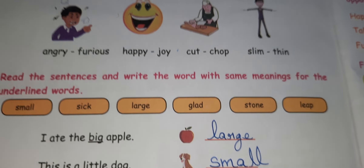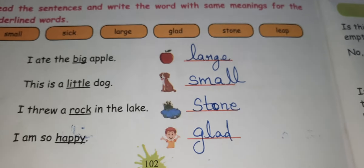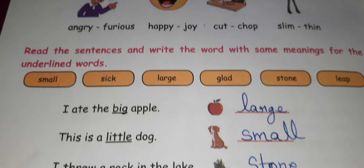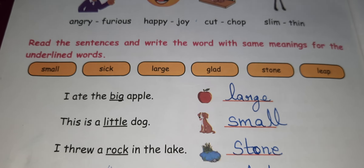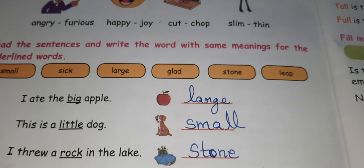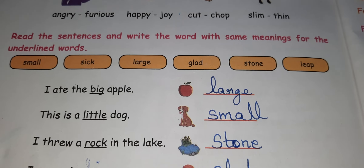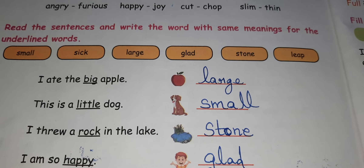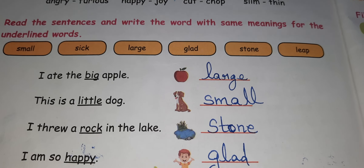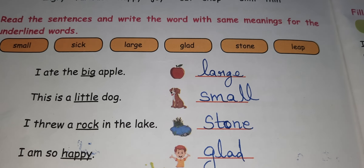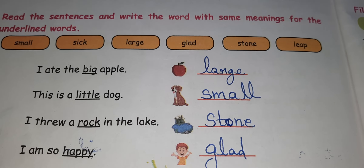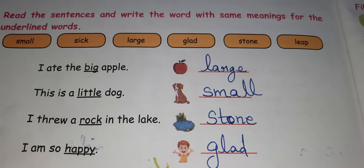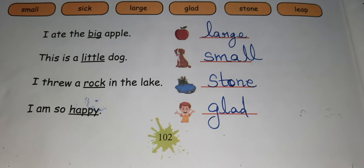Read the sentences and write the words with the same meaning for the underlined words. The given words are: small, sick, large, glad, stone, leap. 'I ate a big apple' — large is the answer. 'This is a little dog' — small. 'I threw a rock in the lake' — stone. 'I am happy' — glad.